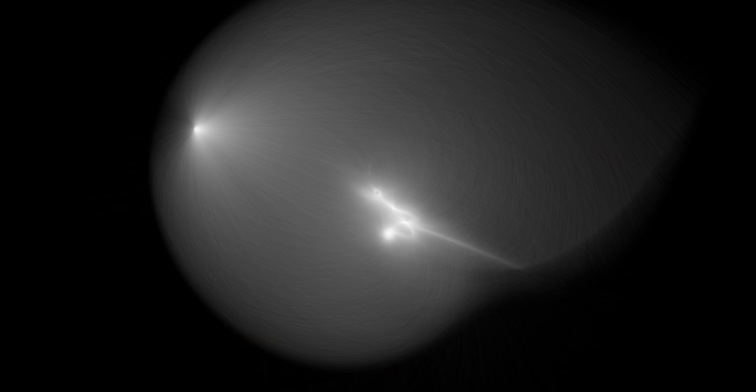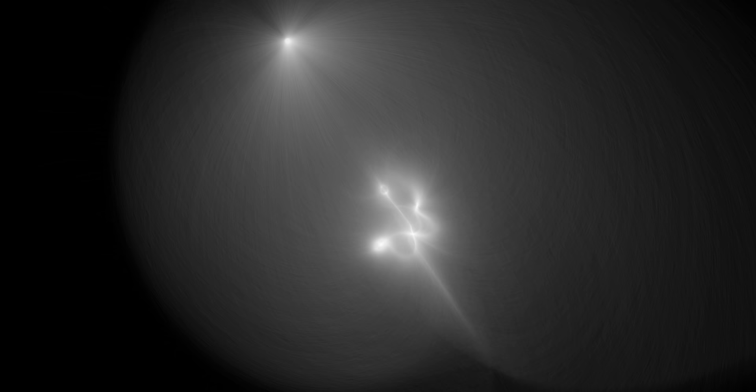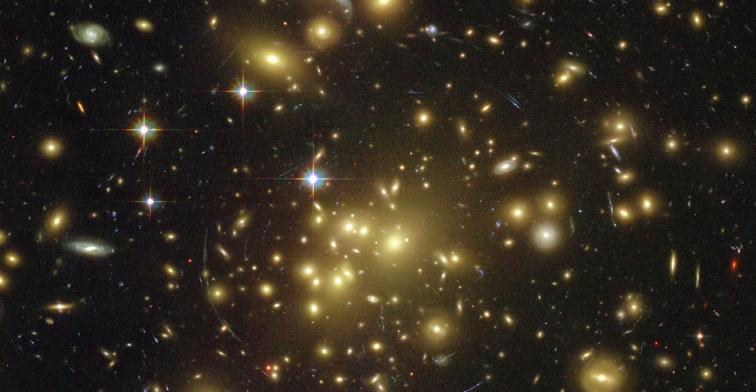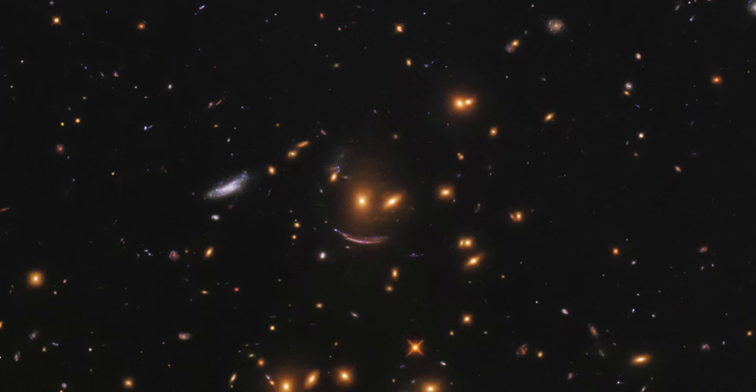The reason we see the same supernova in four different locations is because there is a lens between us and the exploding star. Not a lens made of glass, of course, but a gravitational lens made of a huge amount of ordinary matter and dark matter. Gravitational lensing tends to magnify distant sources and increase their apparent brightness as rays of light become concentrated. This smears the image of distant galaxies into arcs, strands, and all kinds of weird shapes.